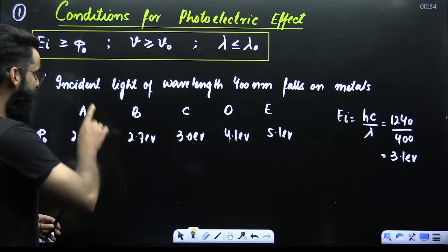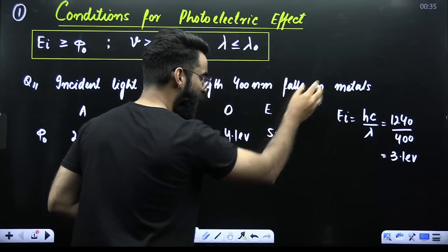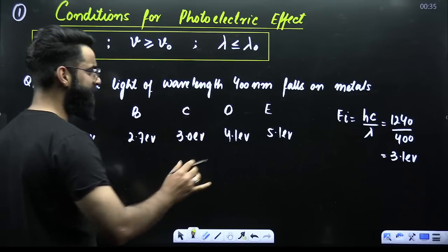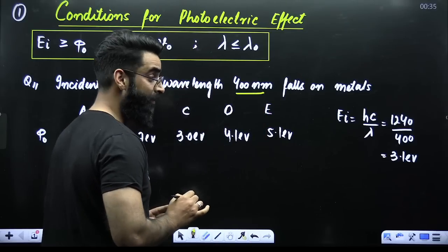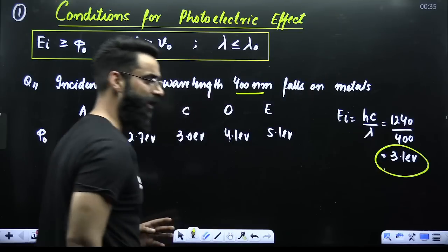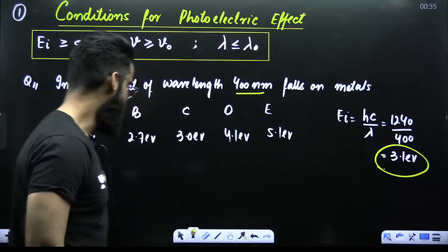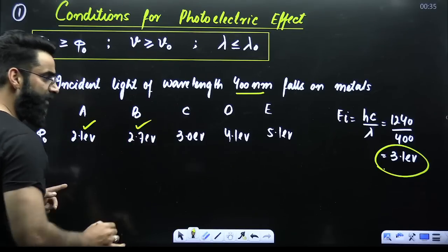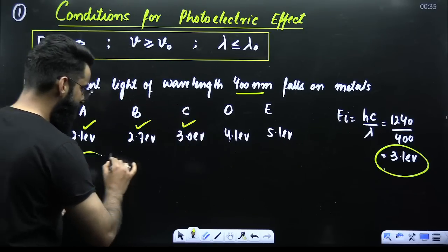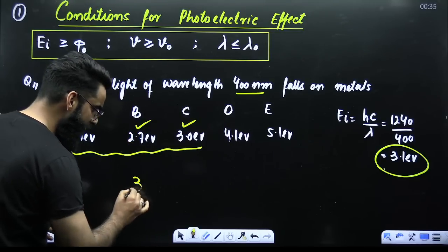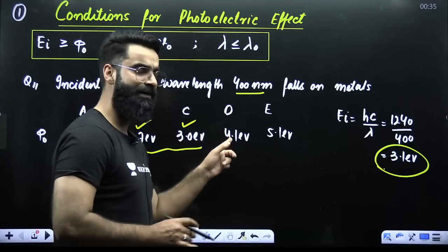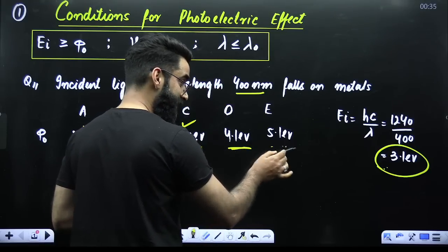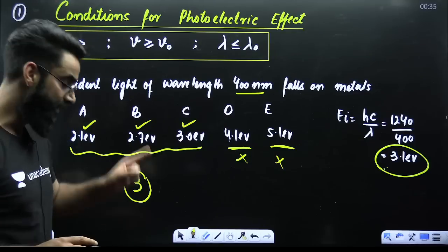For example, incident light of wavelength 400 nanometers falls on these metals. I have to check how many metals will show photoelectric effect. Incident light of 400 nm carries energy of 3.1 electron volts — this is my incident energy. Work function of metal A is 2.1 eV, so incident energy is greater than the work function for three metals, giving answer 3. The remaining two metals won't show photoelectric effect because incident energy is not greater than or equal to their work function. This type of question is frequently asked in examinations.